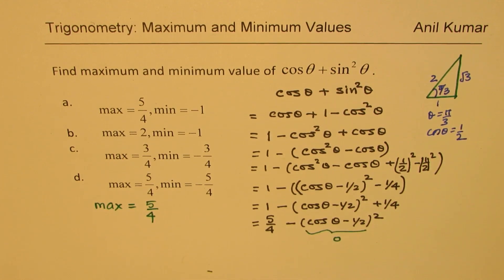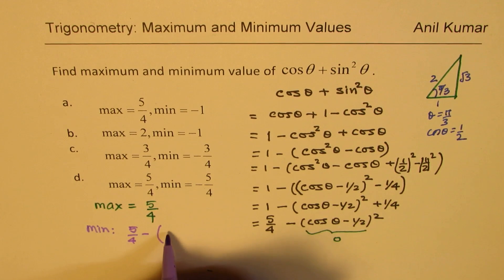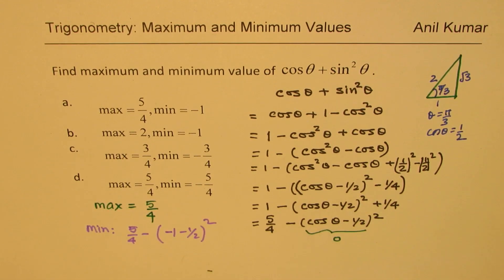Now, when can I get the minimum value? For minimum value, we should have maximum inside. So for minimum, what should be the case? For minimum, cos θ could be -1.